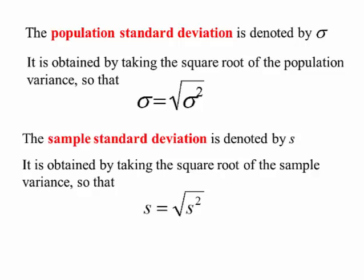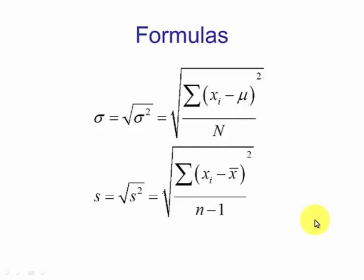And the reason why we're taking the square root is to get back to the original units. Here's the formulas. This is a parameter measuring something by the population. In this class this is the one that we're going to use: the sample standard deviation which is denoted by s. And this is a statistic.